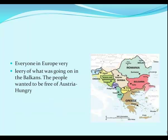Everyone in Europe was leery of what was going on in the Balkans. The Balkans region — between Italy and Europe on the Adriatic Sea — included Greece and various other areas that wanted to be free of Austria-Hungary.